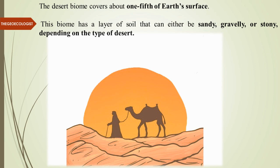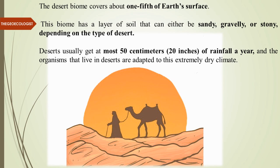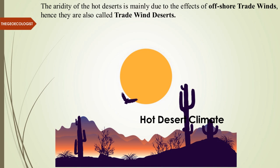Deserts usually receive mostly 50 centimeters of rain — about 20 inches — in a year, which is very little when calculated per month. The organisms that live in deserts are adapted to this dried climate.